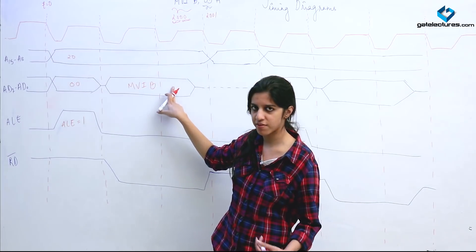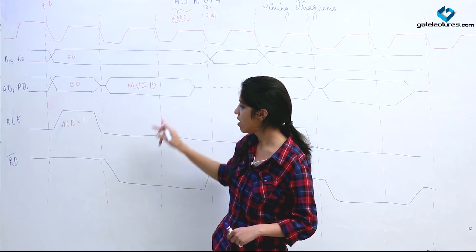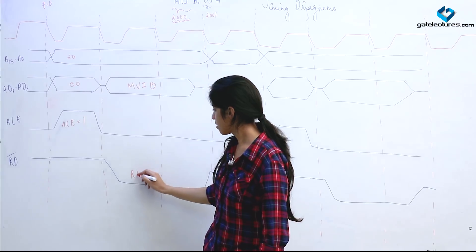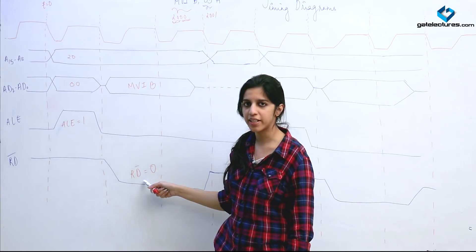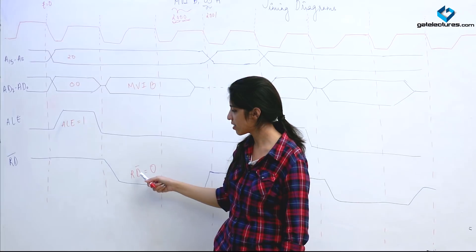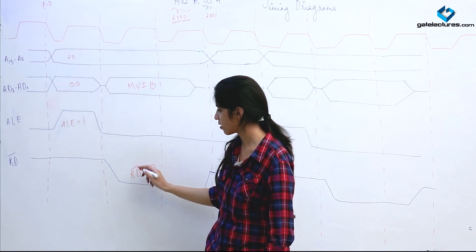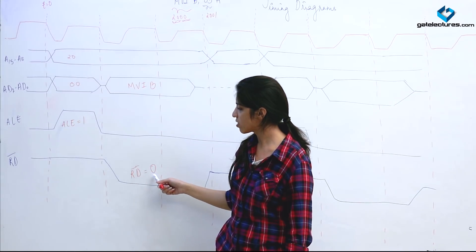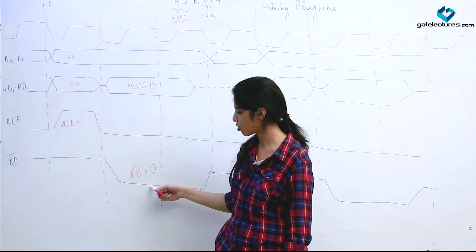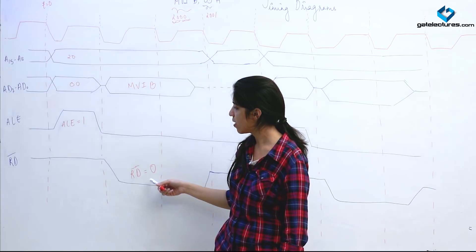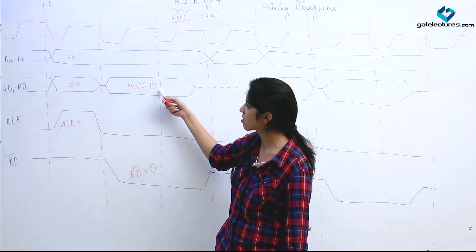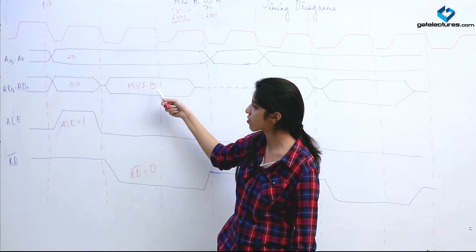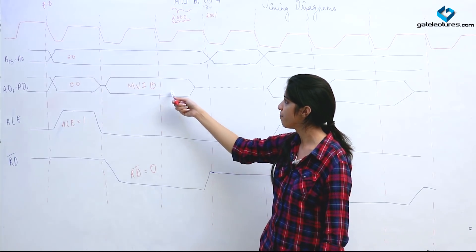With ALE low, the bus behaves as a data bus. We make read bar = 0, which activates the read line, allowing the processor to read the instruction from memory.